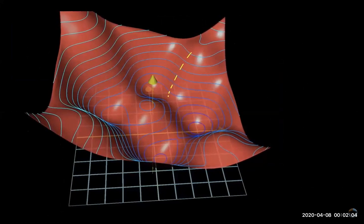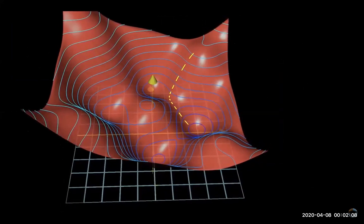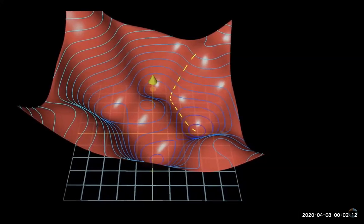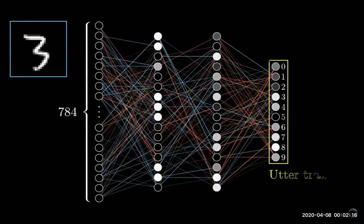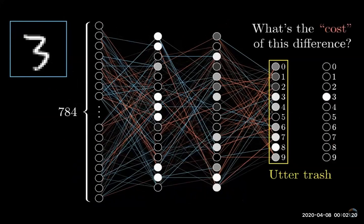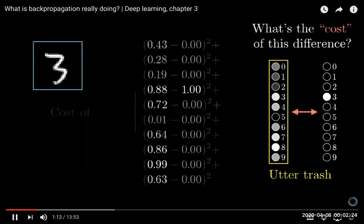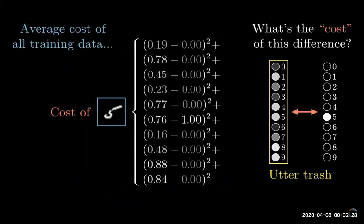What we mean by learning is that we want to find which weights and biases minimize a certain cost function. As a quick reminder for the cost of a single training example, you take the output that the network gives along with the output that you wanted it to give and add up the squares of the differences between each component.